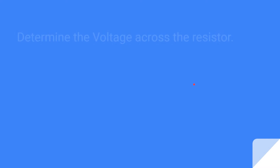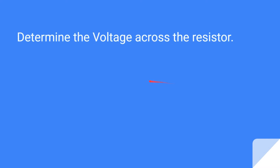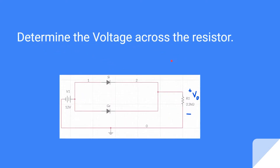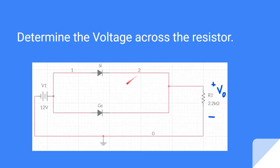Hello everyone, we will be discussing an example. The question is: determine the voltage across the resistor. In this network, there are two diodes — silicon and germanium — and a resistor. We need to determine the voltage across this 2.2 kilohm resistor.